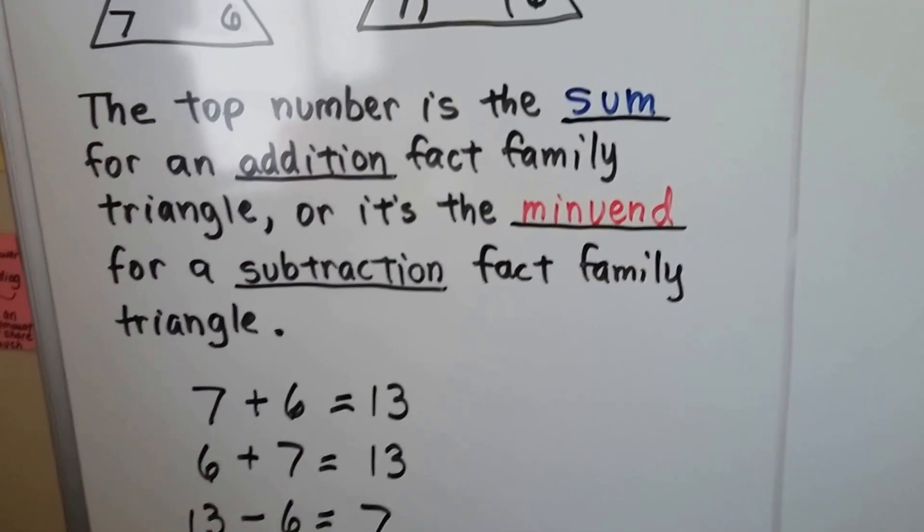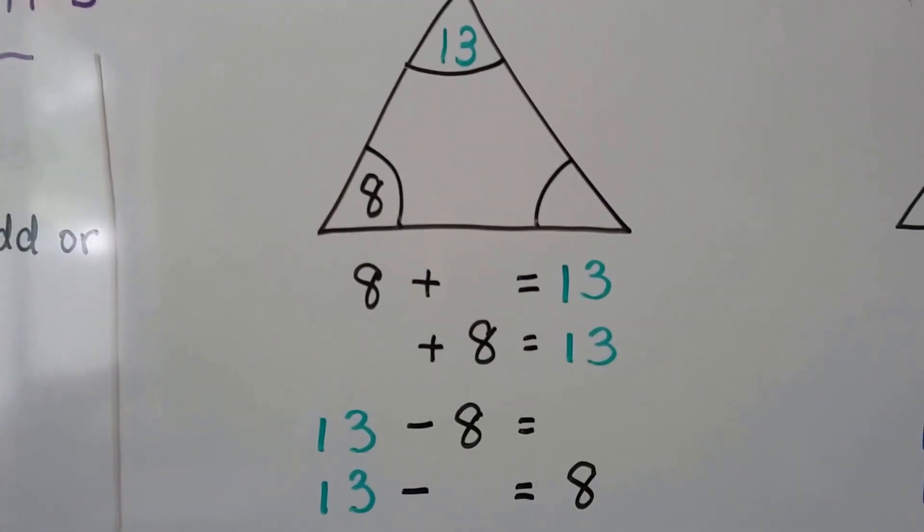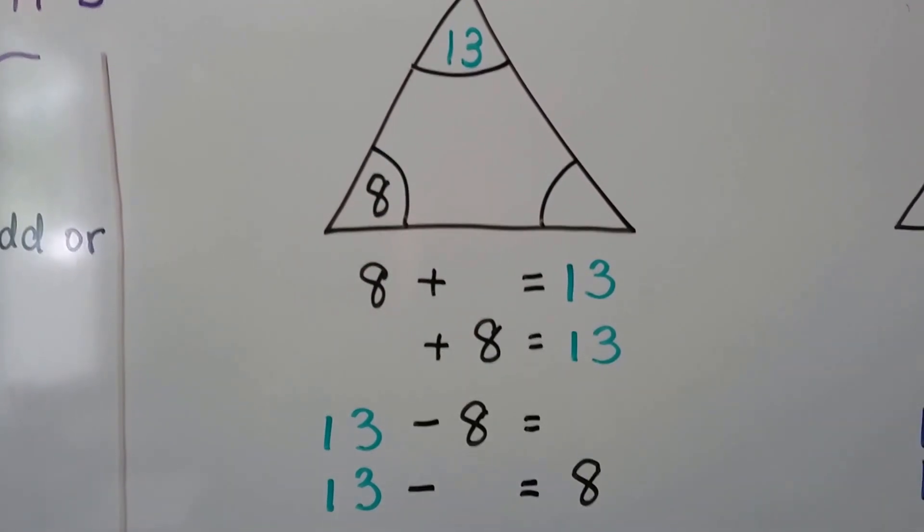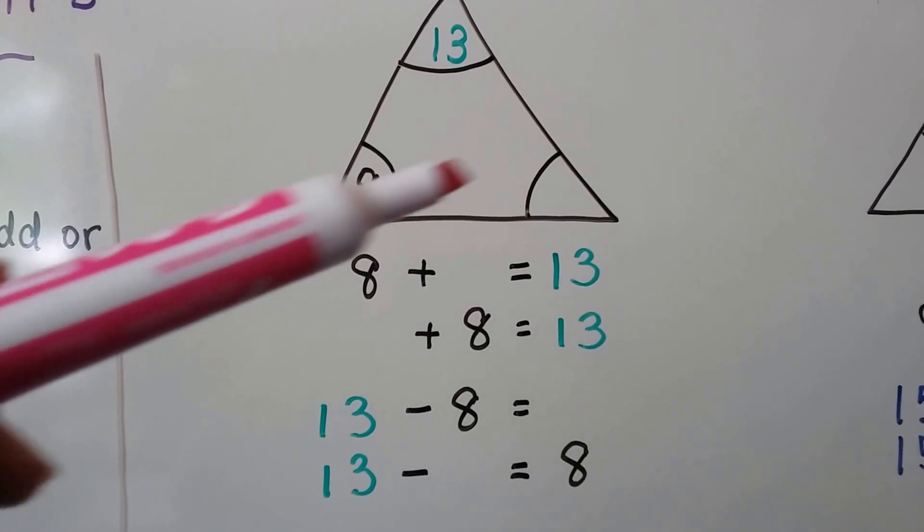Sometimes when you're using these triangles, your homework or the book will have some missing facts. We can use a fact family to help us fill in that missing number.